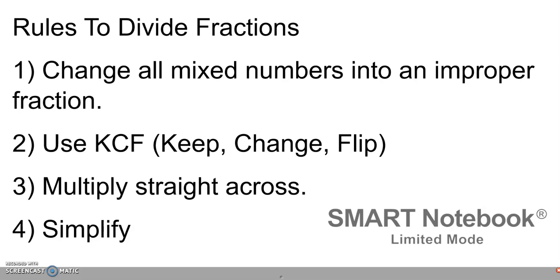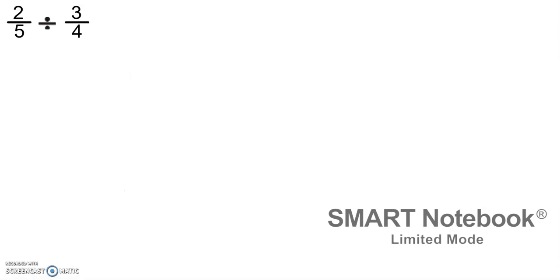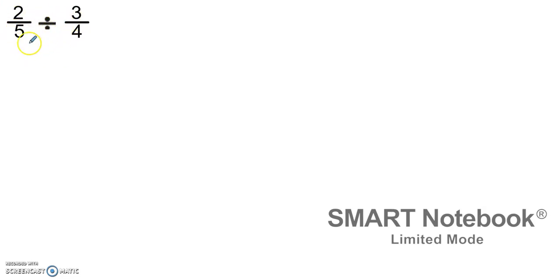Now that we have this in our notebooks, let's look at an example of two proper fractions divided by another proper fraction. So we have two fifths divided by three fourths. Our first step says that we need to change all mixed numbers or whole numbers into an improper fraction. In this case, there are no whole numbers — step one is already done for us.